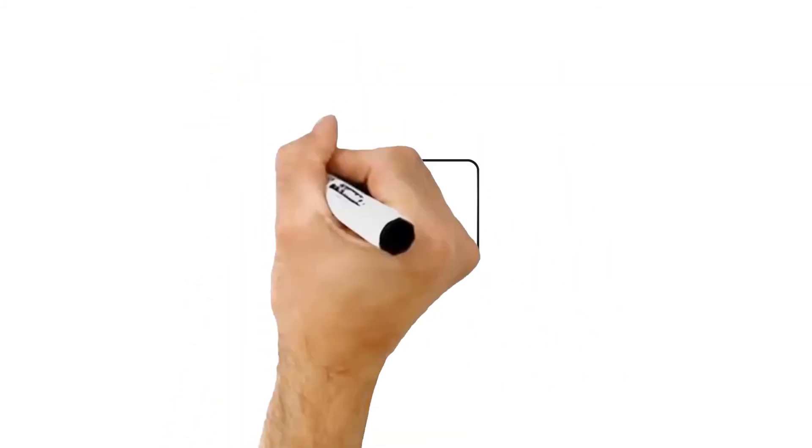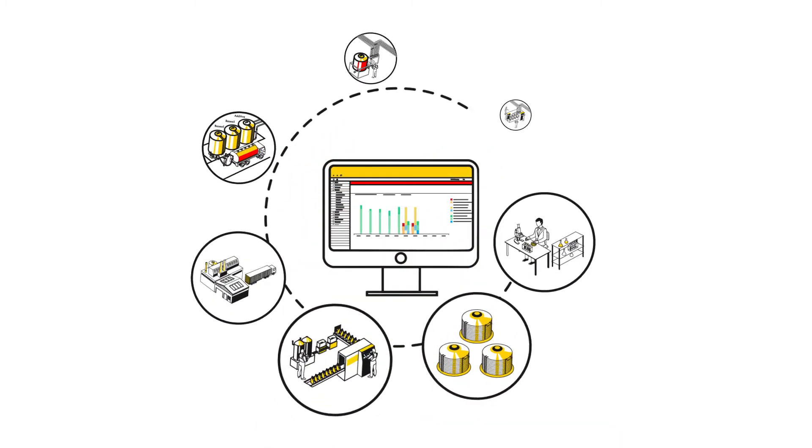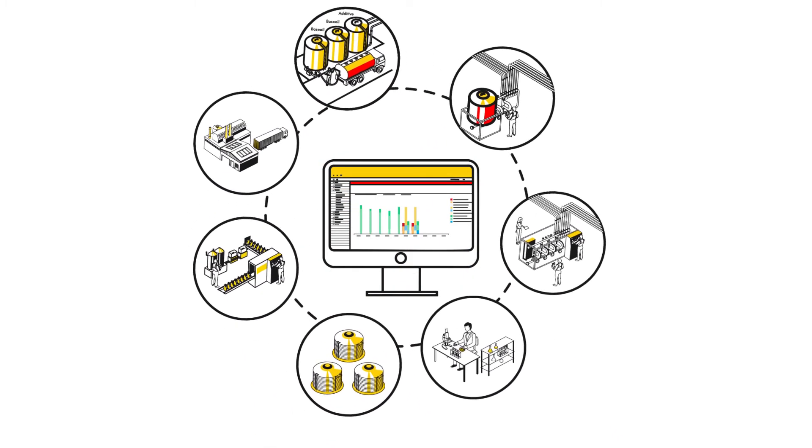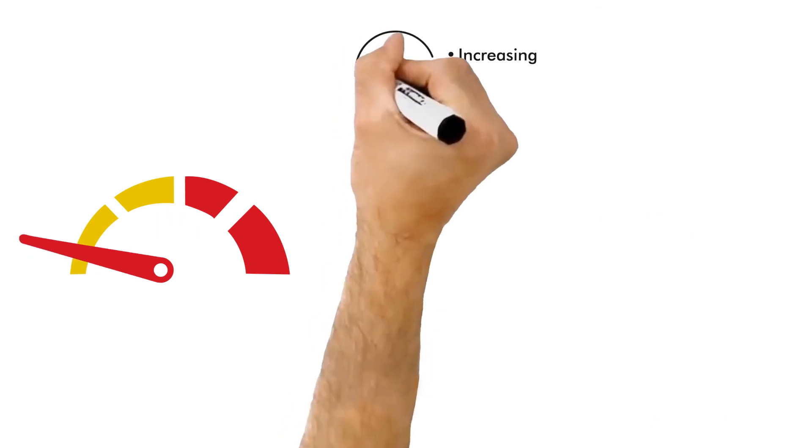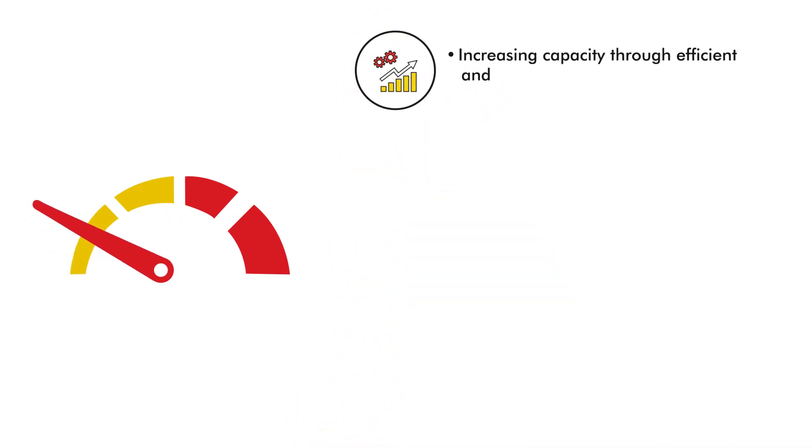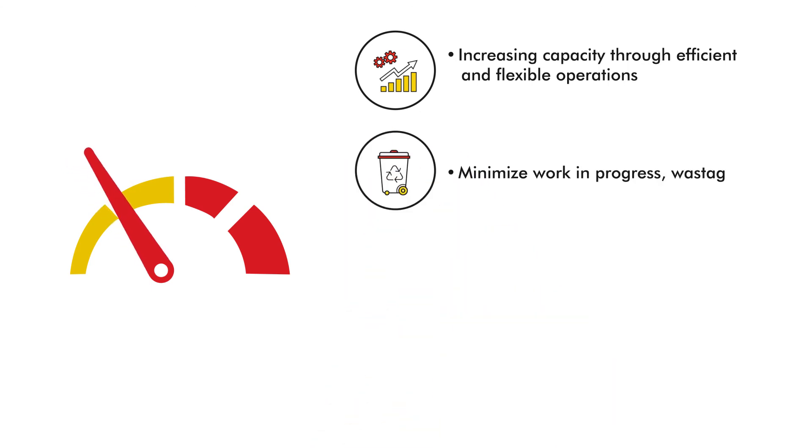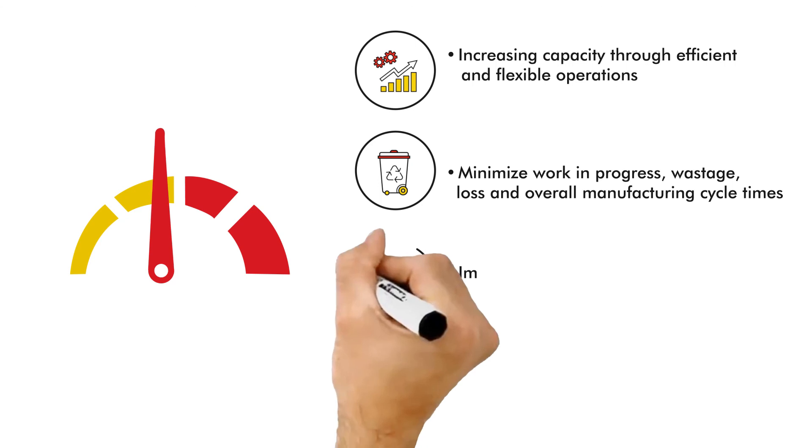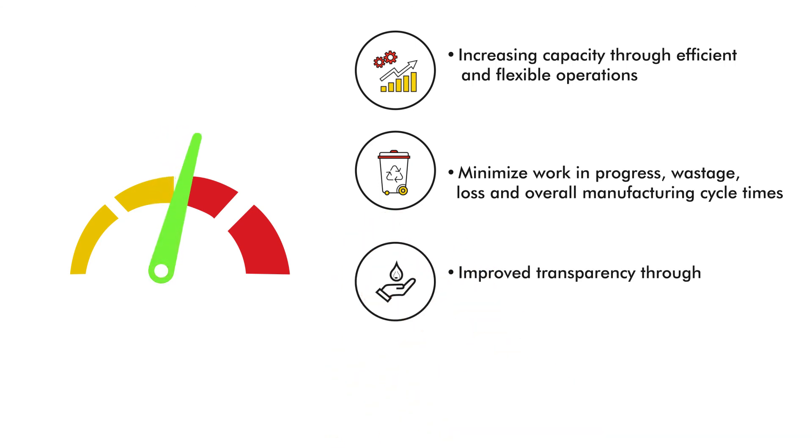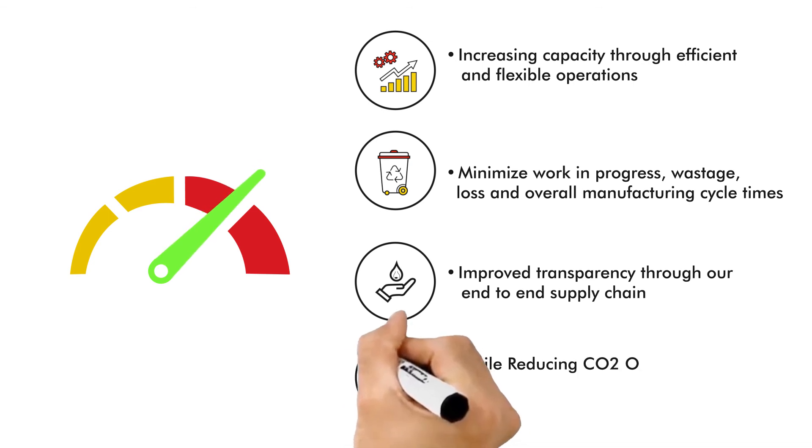In conclusion, MES helps us move the needle in becoming a world-class supply chain organization by increasing capacity through efficient and flexible operations. Minimizing work in progress, wastage, loss, and overall manufacturing cycle times. Improve transparency through our end-to-end supply chain while reducing CO2 output via optimized production processes.